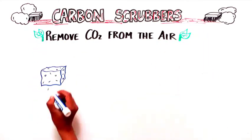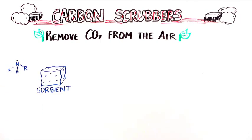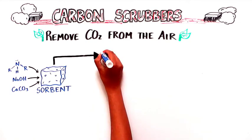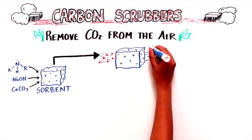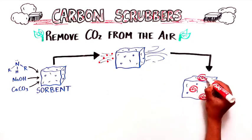They contain a sorbent, which is a chemical compound like an amine, sodium hydroxide, or limestone, that binds reversibly to carbon dioxide. As air passes through the sorbent, it binds to carbon dioxide molecules, essentially absorbing them like a sponge.